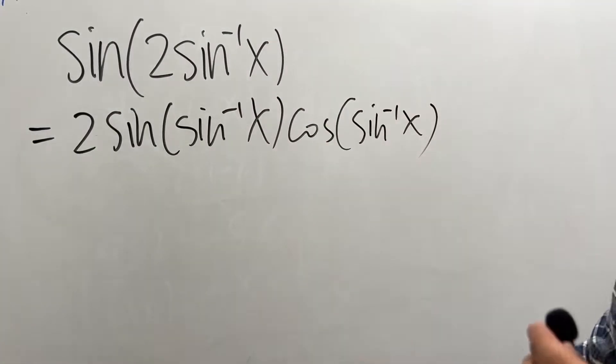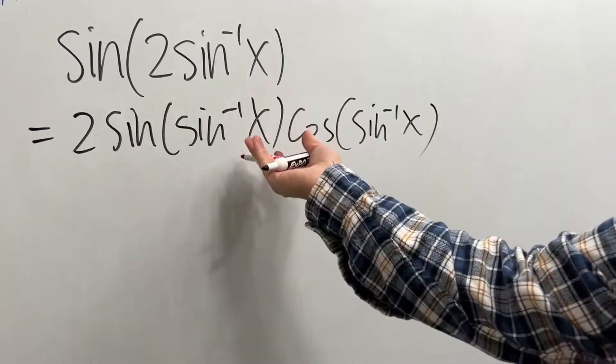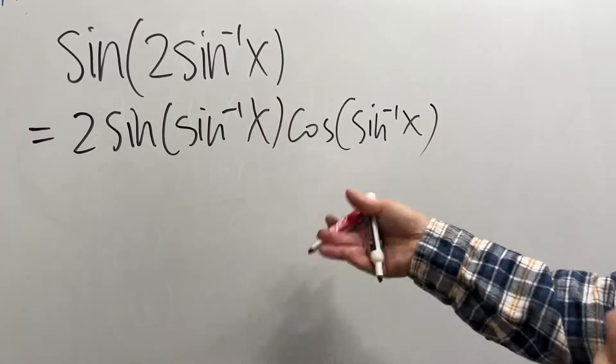And now, here's the deal. This and that cancel, assuming x is in the right domain. And then this right here, you have to work this out a little bit.